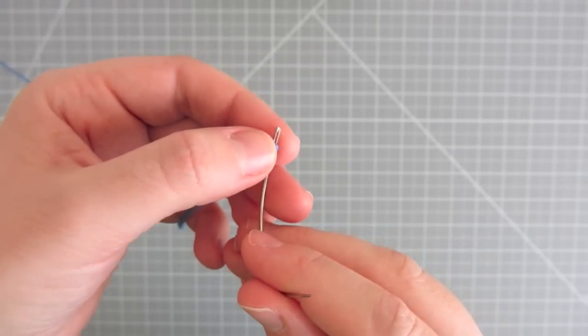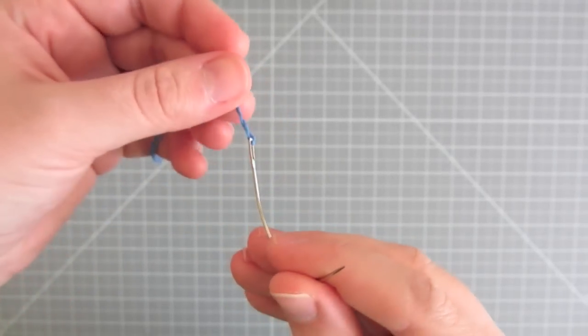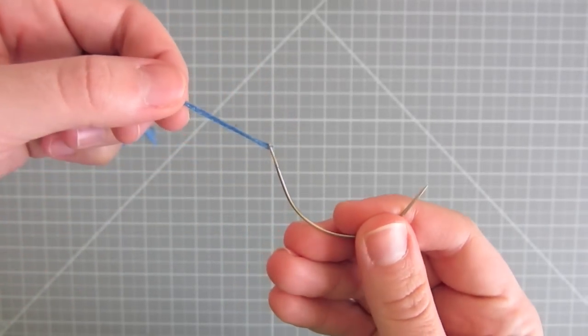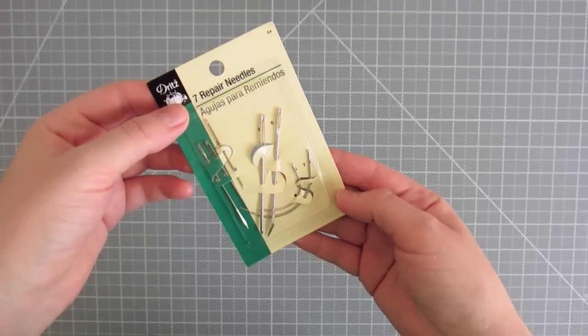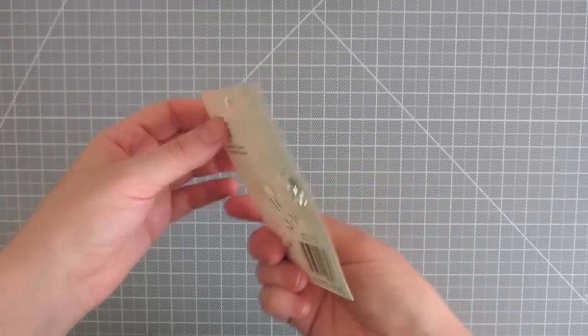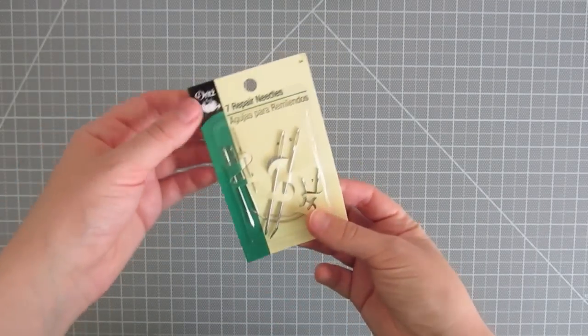The first one is a curved needle. You can get curved needles that are specifically for bookbinding or you can usually find a general curved one that does the same job. I got mine from this repair kit and I used the large one for the thick thread that I use.